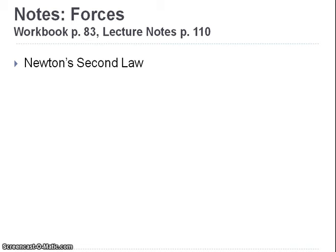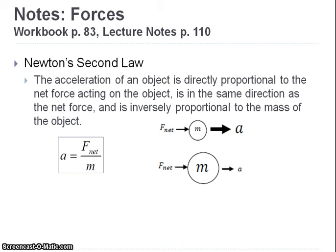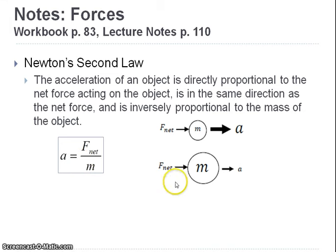Newton's second law states that the acceleration of an object is directly proportional to the net force acting on it, is in the same direction as that net force, and is inversely proportional to the mass. It's typically written as acceleration equals net force over mass, or the sum of forces on an object equals mass times acceleration. If you have a force acting on a small mass, that force will cause a really big acceleration. Whereas that same force acting on a big mass will produce a smaller acceleration.